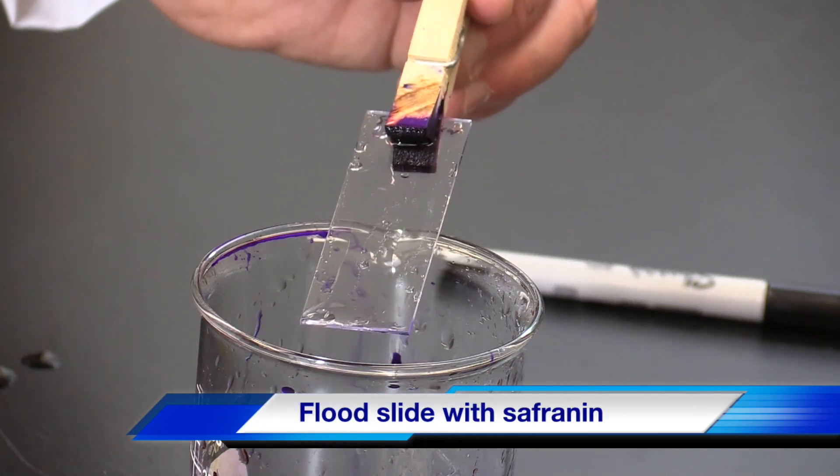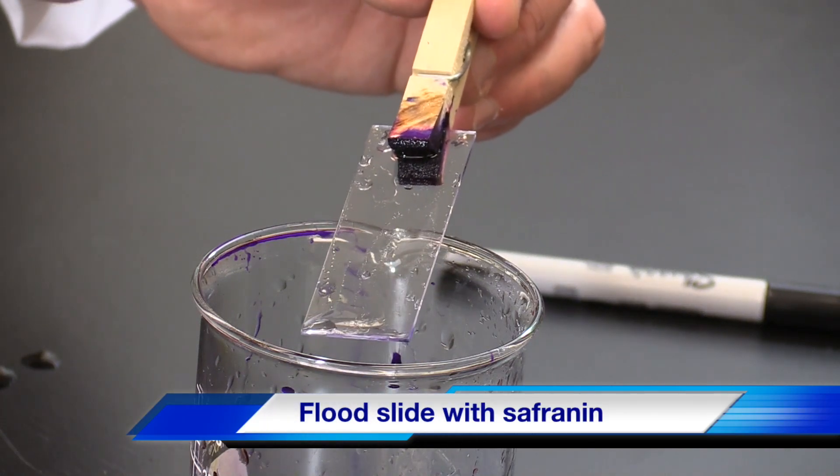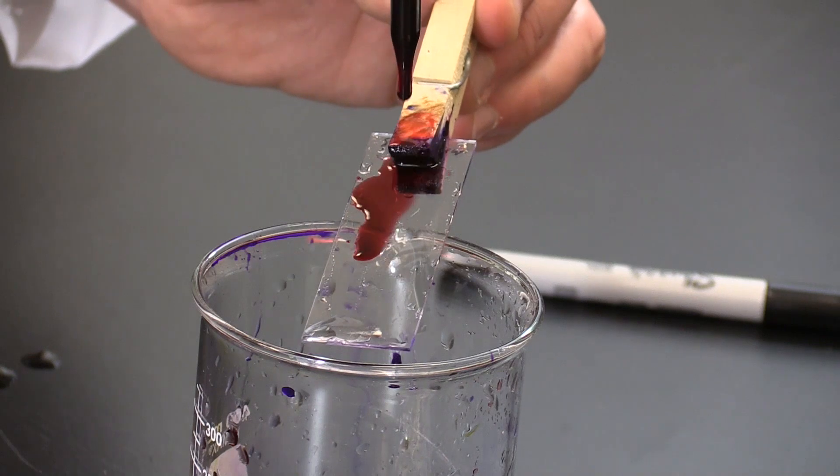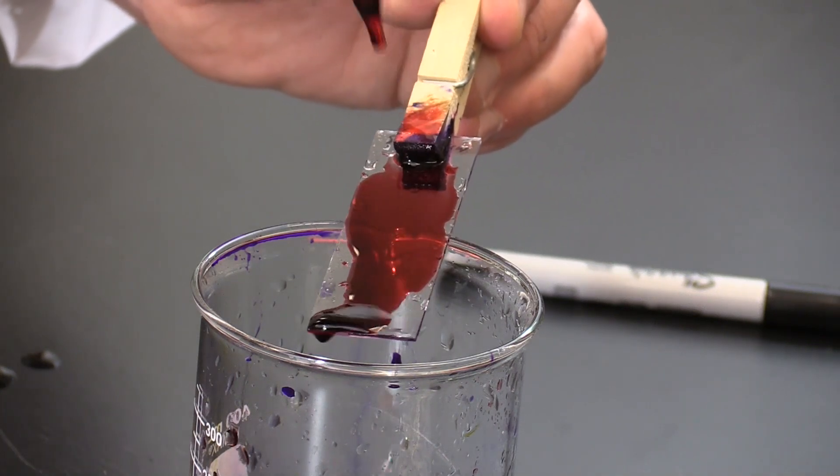Flood the slide with safranin to cover the bacterial smear and allow to stain for one minute. The safranin will stain the decolorized Gram-negative bacteria pink.